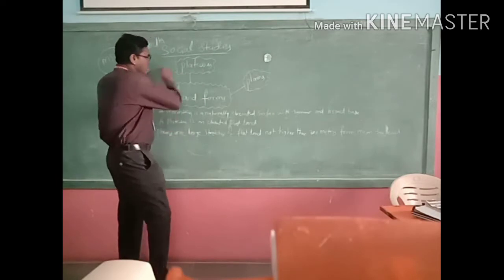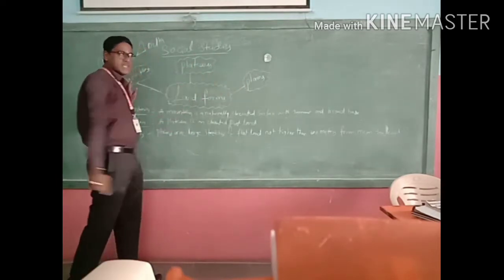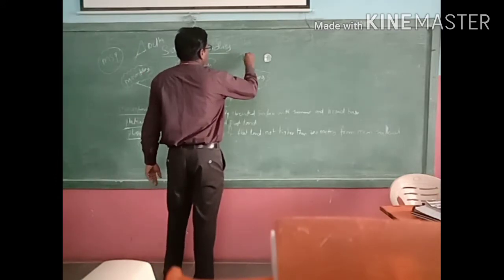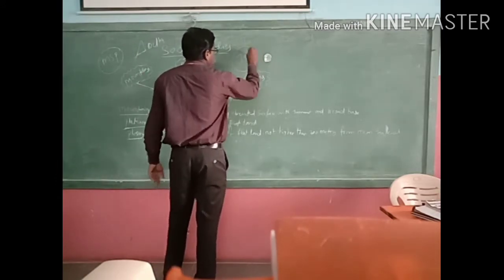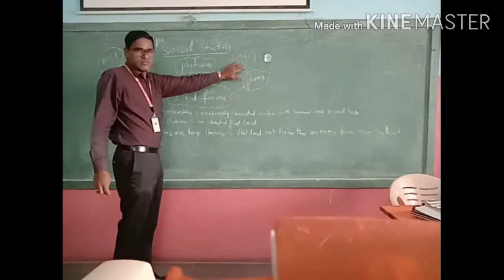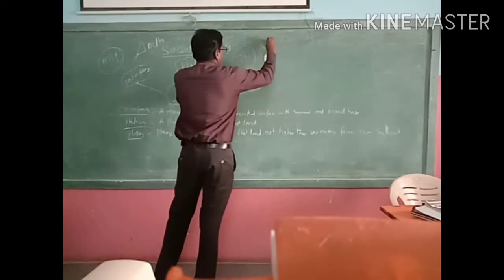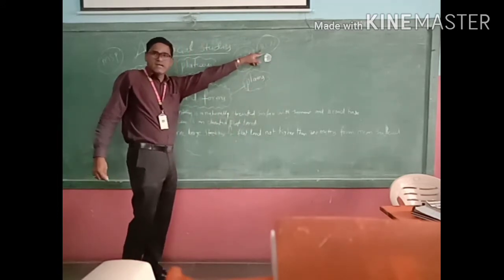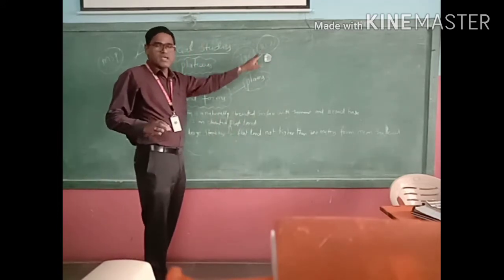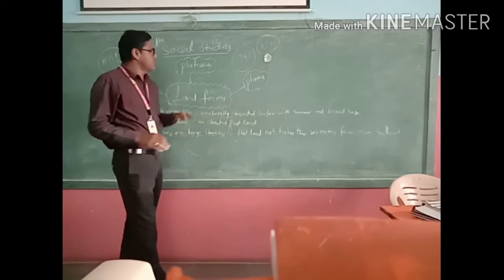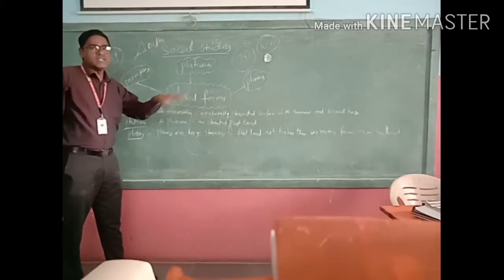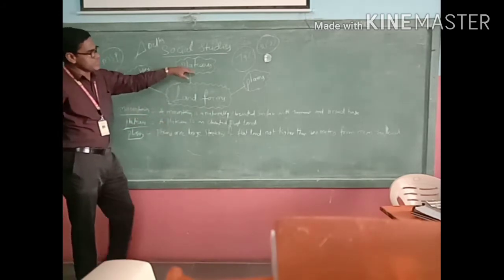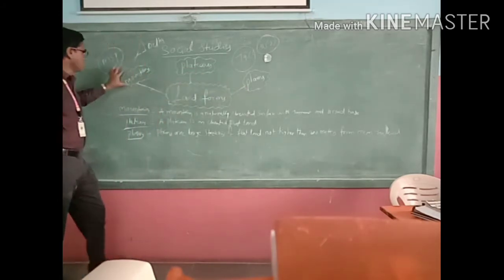This total land is not the same — it is uneven, meaning different types. So the landforms are divided into three categories: one is plateaus, plains, and mountains. On the Earth planet, 79% is covered with water, and the remaining 21% is total land.